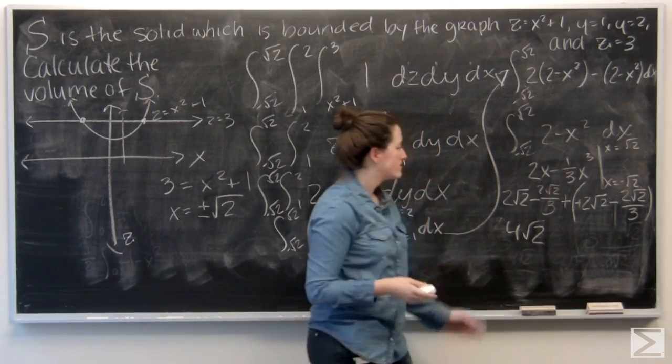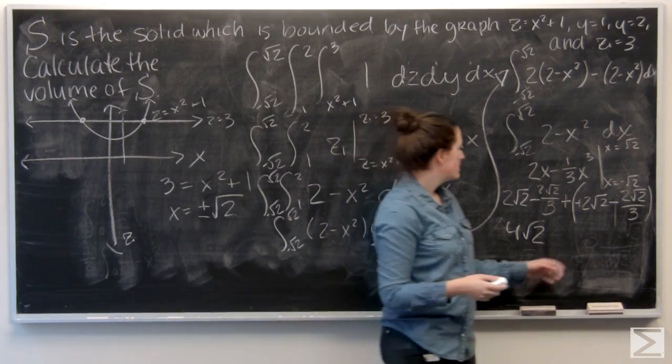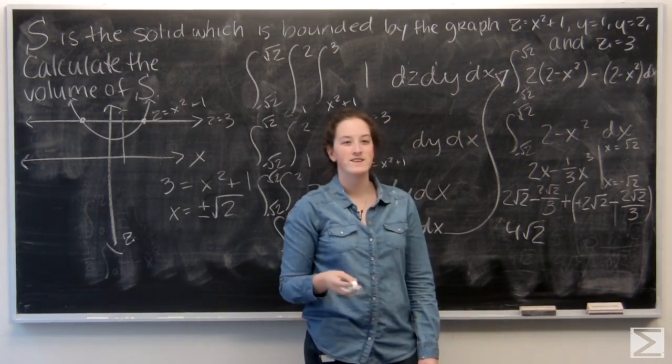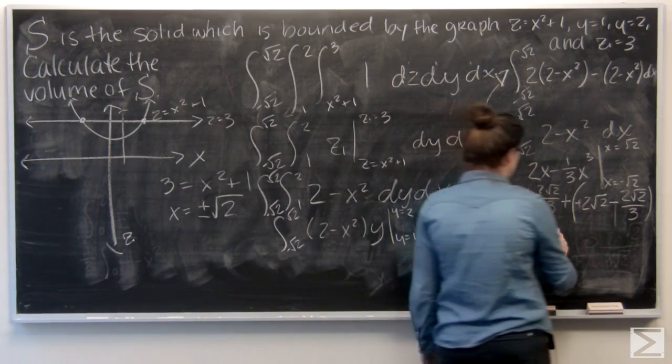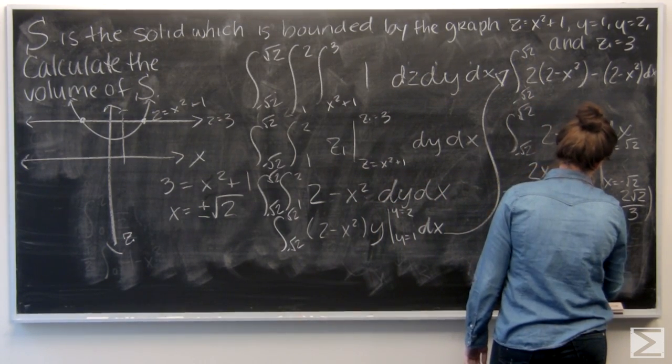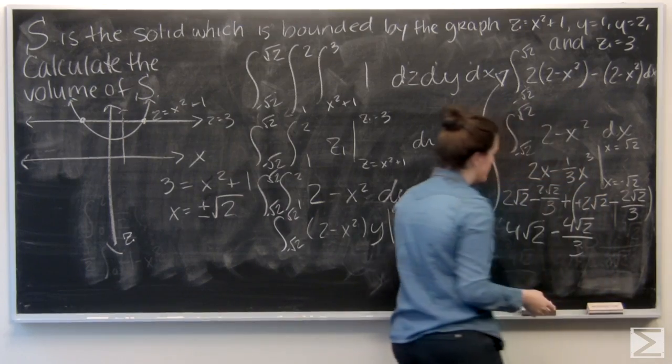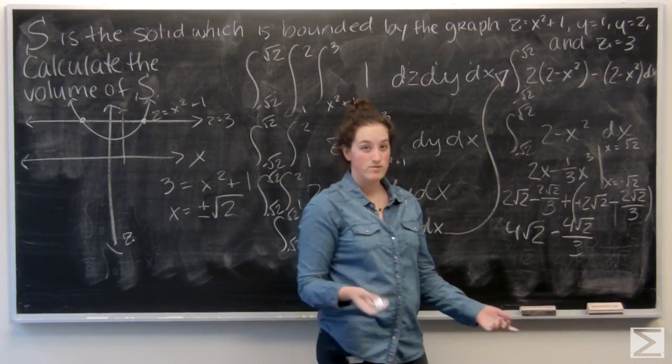And negative 2 square root of 2 over 3 minus 2 square root of 2, so 2 square root of 2 over 3 is 4 square root of 2 over 3. So subtracting, I'm going to get 8 root 2 over 3, and that's my answer for the volume of S.